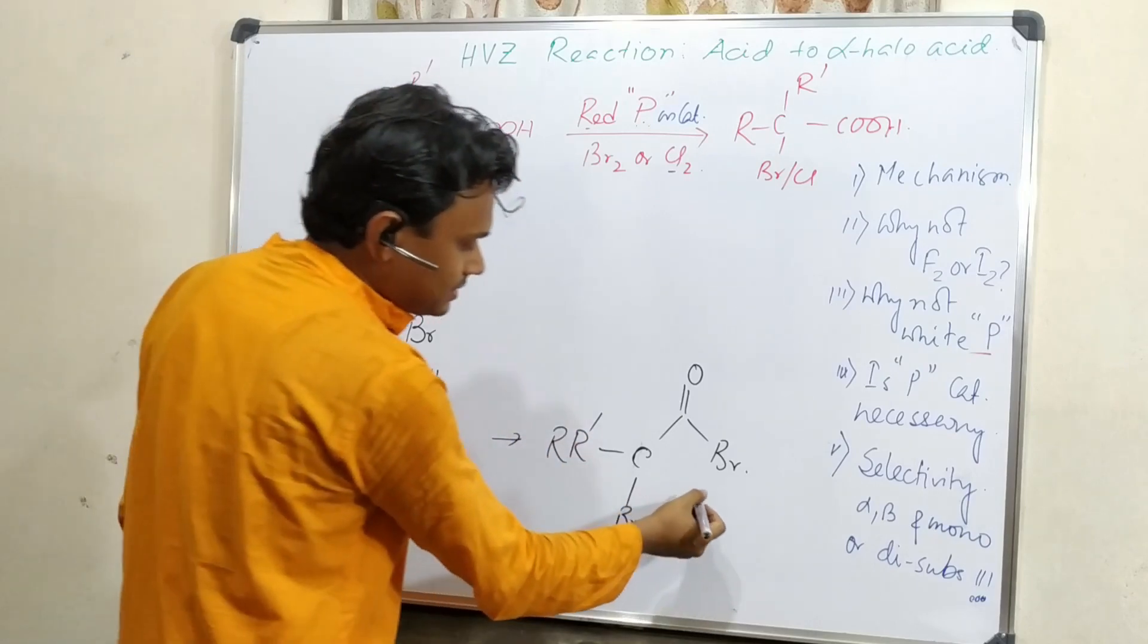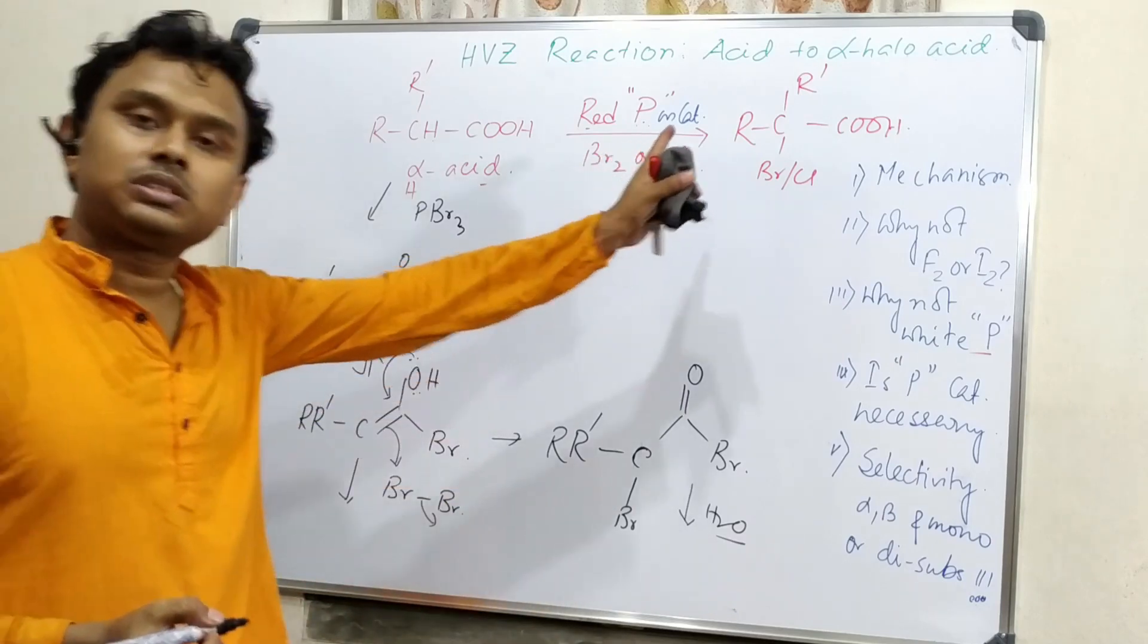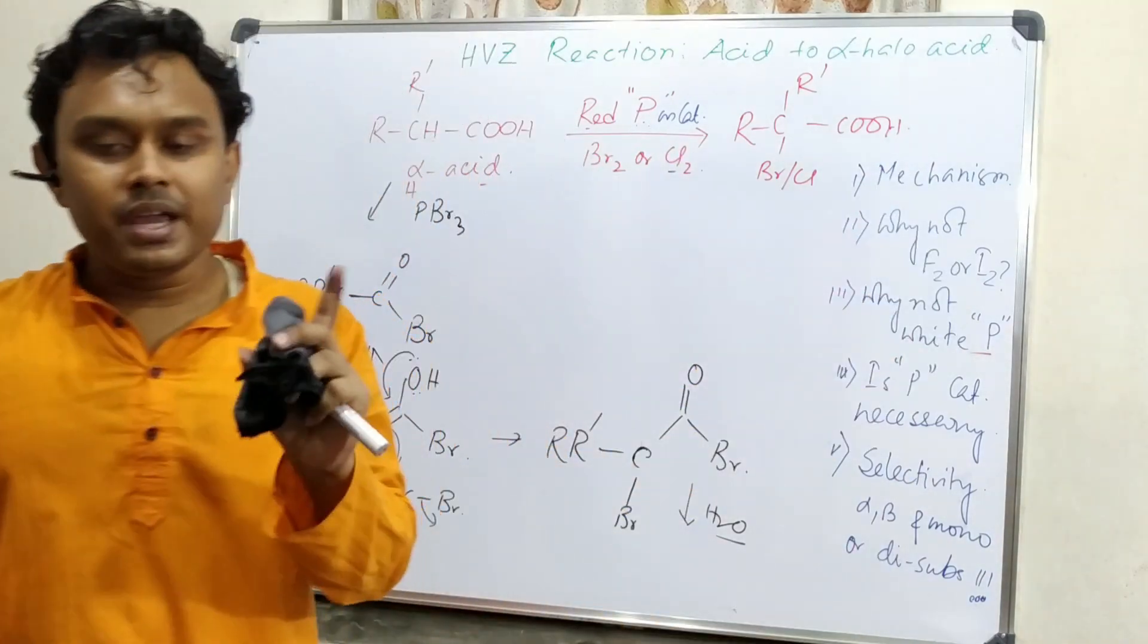So the electron availability of this carbonyl oxygen is less. So it is less efficient for giving electron to H plus. So this is what happened. So if we hydrolyze this in presence of water, it will produce alpha-halo carboxylic acid. The main important thing is that for this phosphorus should be taken in stoichiometric amount such that stoichiometric PBr3 or PCl3 is produced.